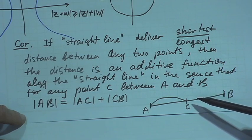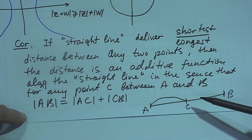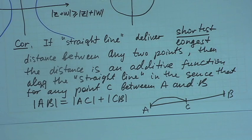This is a weaker property — it follows from the variational property of shortest or longest curves — but because it is weaker, it is suitable for generalization. According to Blumenthal, we define a line as a curve such that the distance is additive: if that property holds for any point C between A and B, then AB = AC + CB.